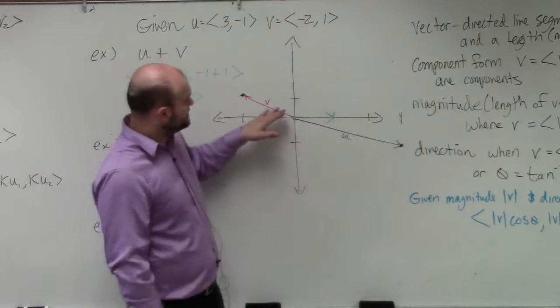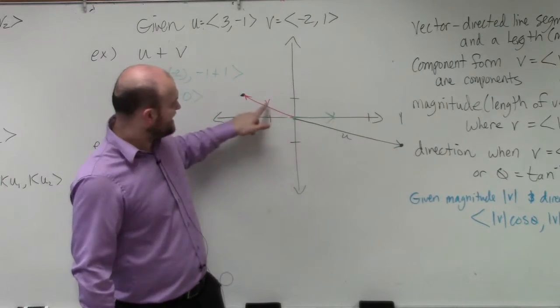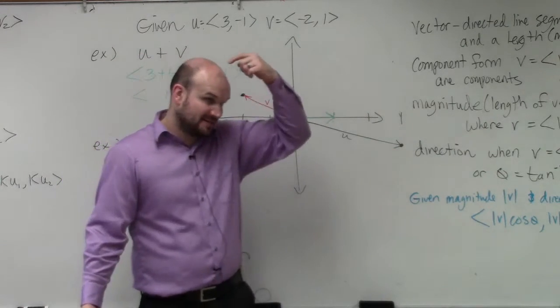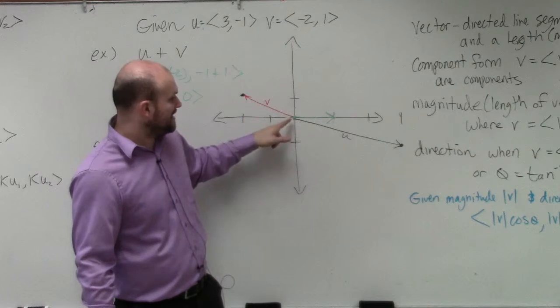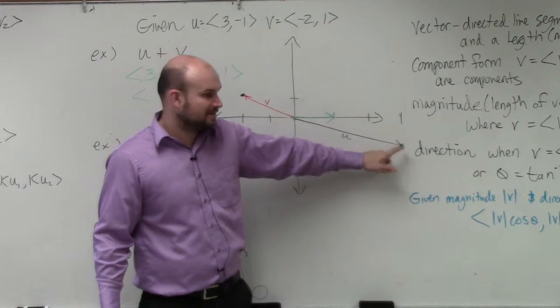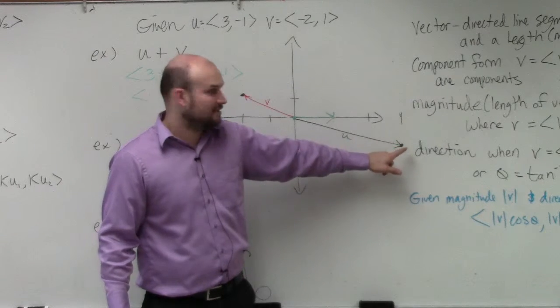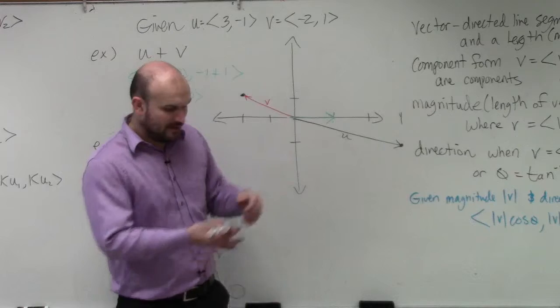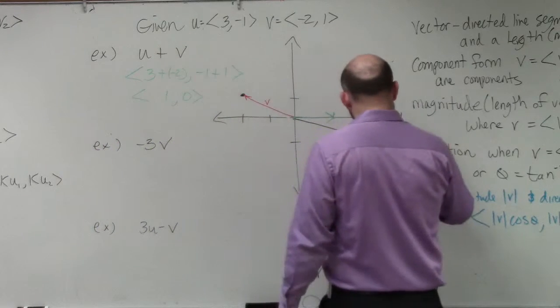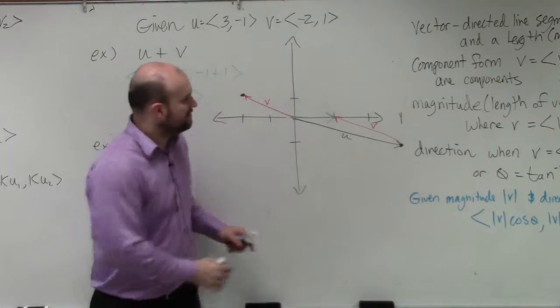So what we do is if you graph one vector u, then what you're going to do is take the tail. Tail would kind of be the behind, right, where the head would be the top. Take the tail of your other vector and then add it to the head of your previous vector. So what would happen if I went over 2, left up 1 from here? Over 2, up 1. So what you guys would see, if I put my one vector...